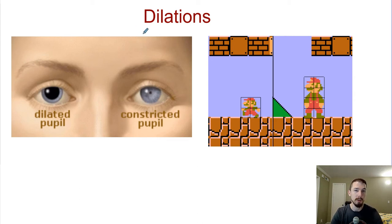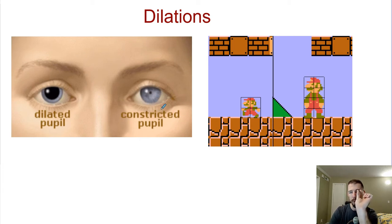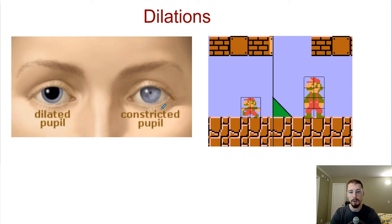Dilations are when we are enlarging or reducing an image by some scale factor. The word dilations — you probably know it best from dilated pupils. Whenever it's really dark, your pupils are dilated and really large, which allows you to bring in a lot of light so that you can see better in the dark. Constricted pupils would be like a reduction where it gets really small. If you're outside on a sunny day at the beach, your pupils will be constricted to protect your eyes from being damaged by all the sunlight, giving you a small aperture size.